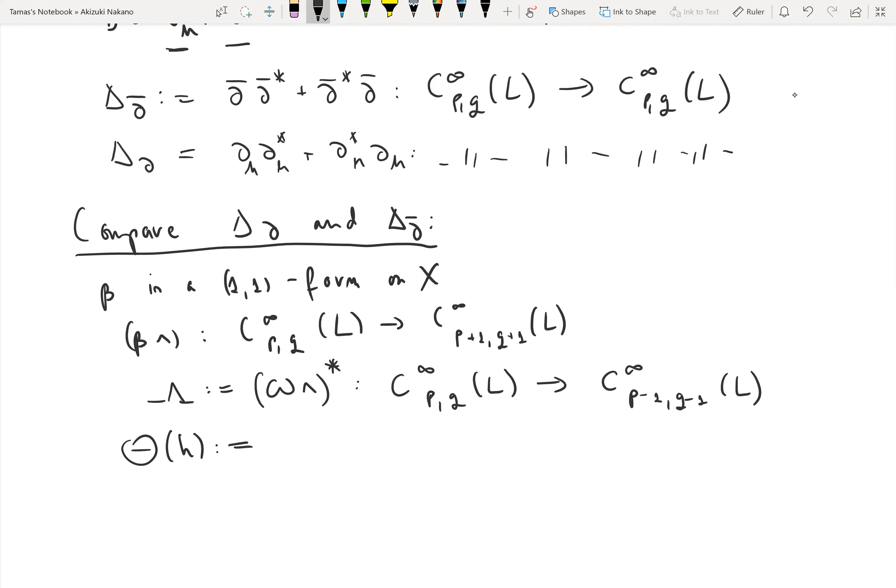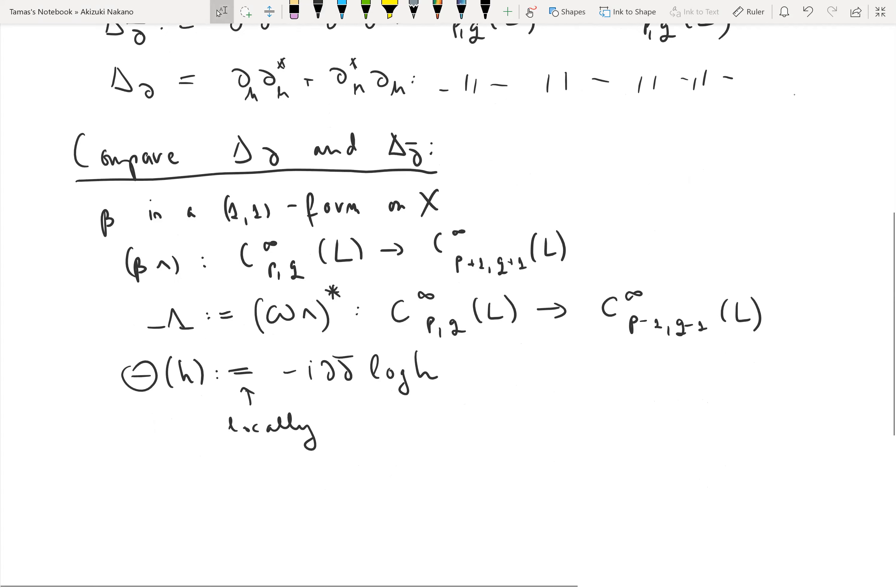Then, as we introduced earlier, theta_h will denote the curvature of the Hermitian structure, which locally is negative i times del-bar log of h.